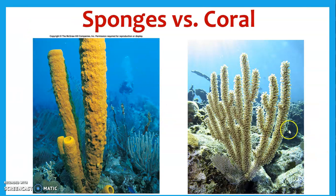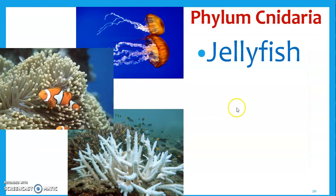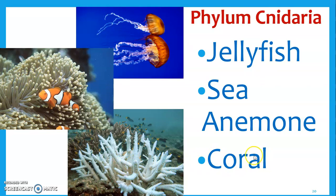Sponges might look a lot like coral, and they do, but they actually have some pretty significant differences. We're going to move on up from sponges to Cnidarians — this is where coral would be. So, developing tissues: instead of just being multicellular, now we have developed tissues, and one of the first things is going to be a nerve net — they actually get more of a nervous system. This phylum includes jellyfish, sea anemones, and corals and coral reefs.